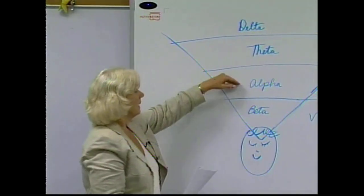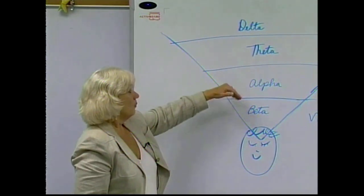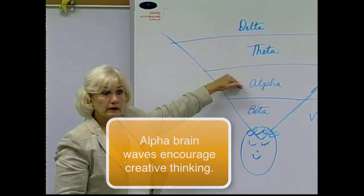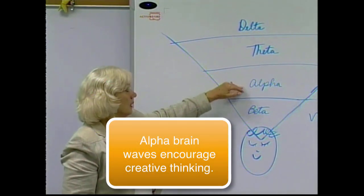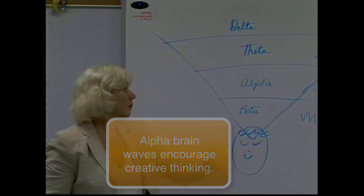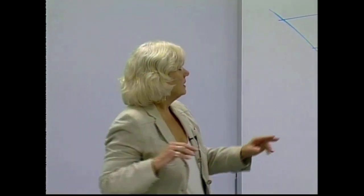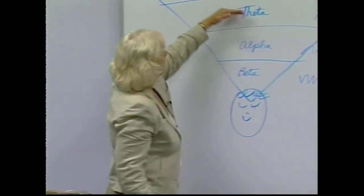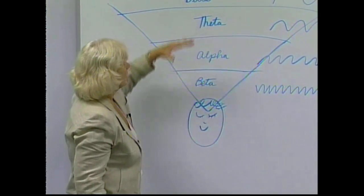And then as we move into alpha, we are actually able to be more creative. So the brain waves are further apart and calmer. And this is us moving into creativity. So this could be the subconscious mind, or the subconscious moving into superconscious mind.